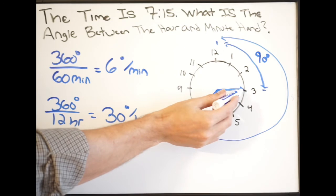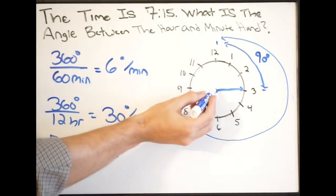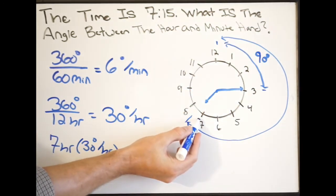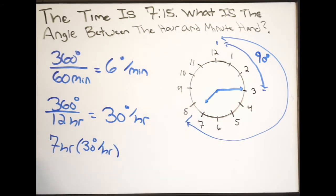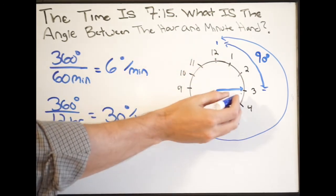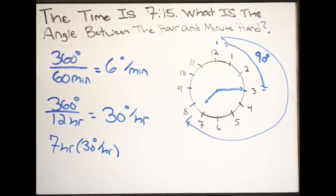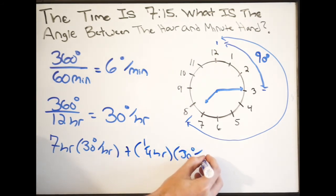Meaning, my hour hand is not going to be on to 7. It's going to be a little past, and in particular, it's going to be a quarter past 7, because it already went 15 minutes. So in order to account for that quarter hour, I have to do plus a quarter hour times 30 degrees per hour.